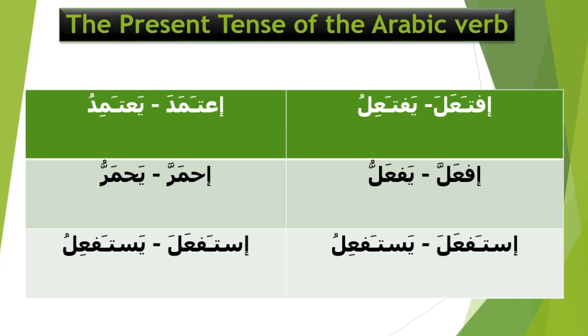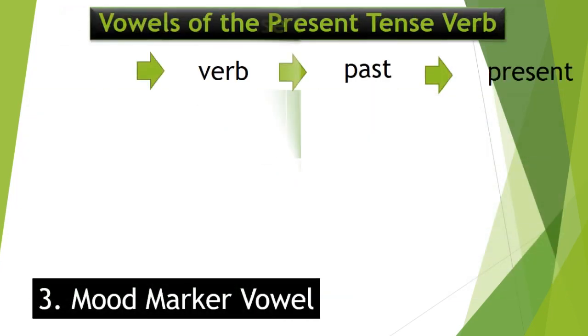Verb forms include: يستفعل, استفعلا, يستفعلوا. These represent vowel patterns of the present tense verb in Arabic.